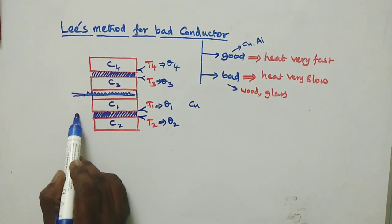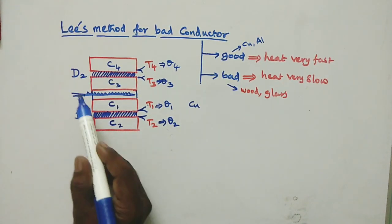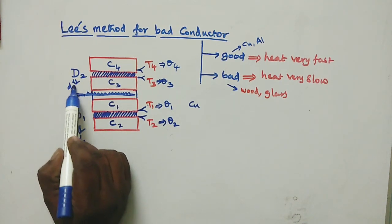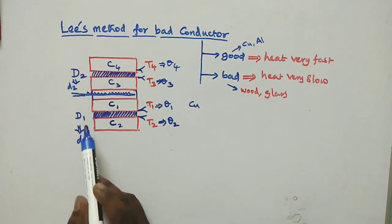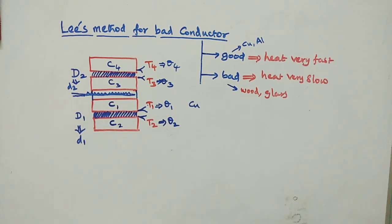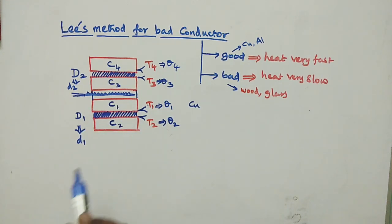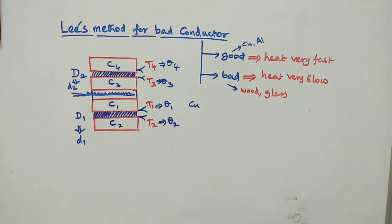The bad conductor specimens are disc D1 and disc D2. The thickness of D1 is small d1, and the thickness of D2 is small d2. D1 is the bad conductor placed between C1 and C2, and D2 is placed between C3 and C4. The surface of the bad conductor is coated to improve thermal contact.